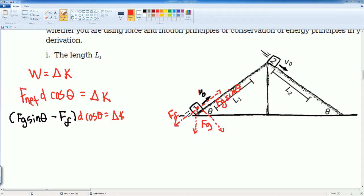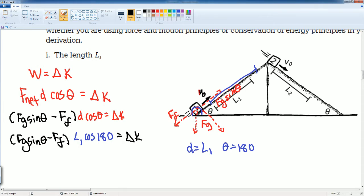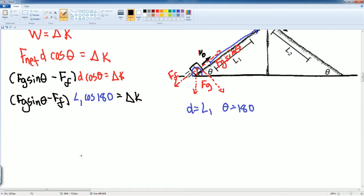Next, we want to take a look at the D cosine term. The D here is going to be L1 because that is the distance traveled. And notice that the angle here is going to be 180 degrees. So you can write L1 cosine of 180, bring everything else down. That's how that should look like: force of friction equals to, there you go.